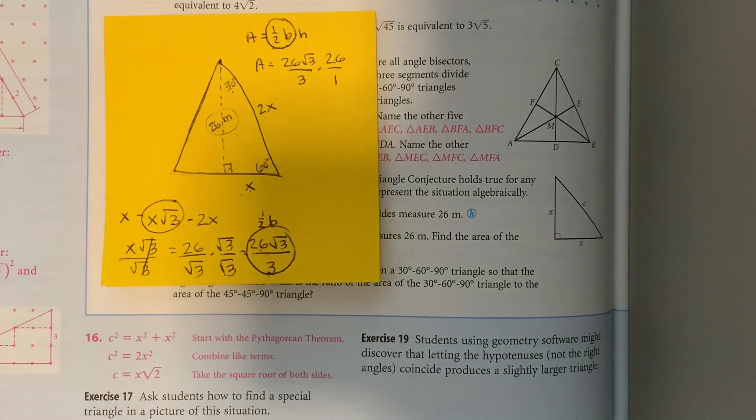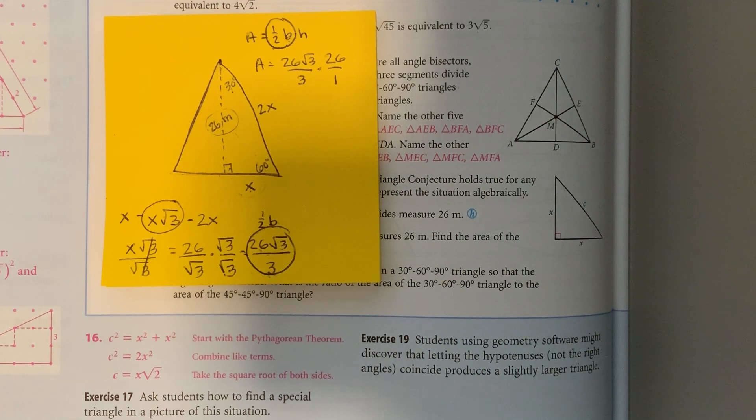Let me get to my calculator. We'll do 26 times 26 times the square root of 3, then divide by 3. Let me redo that - 26 times 26 times the square root of 3, then divide by 3. There we go.